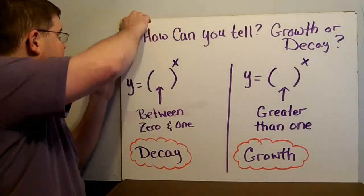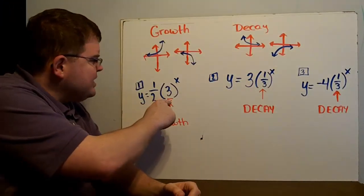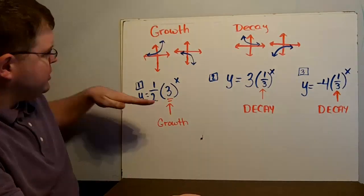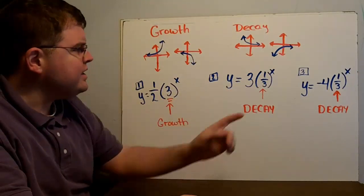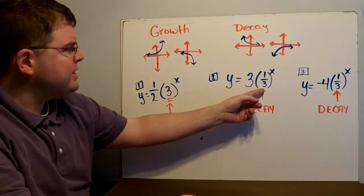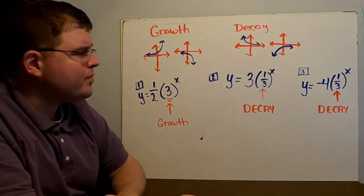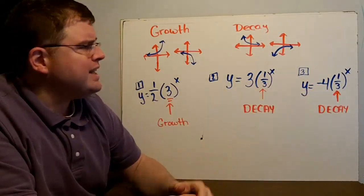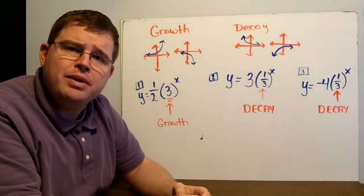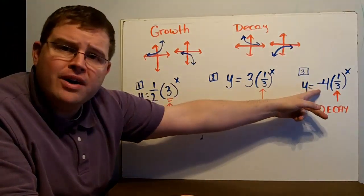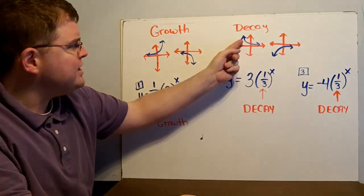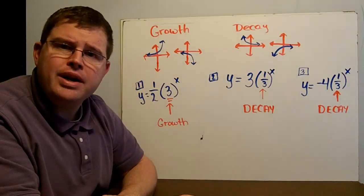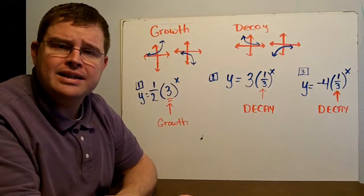Let's take a look at a couple of examples. In our first example, we have y equals 1-half times 3 to the x. Notice the number that has the exponent is 3. Because it's greater than 1, it's a growth function. In the next example, the number that has the exponent is 1-third — that number is less than 1, so that's going to be decay. In example 3, y equals negative 4 times 1-third to the x — again, the number inside is less than 1 and greater than 0, so that's decay. The special thing to notice is that the number out front is negative, which causes the graph to flip upside down over the axis.